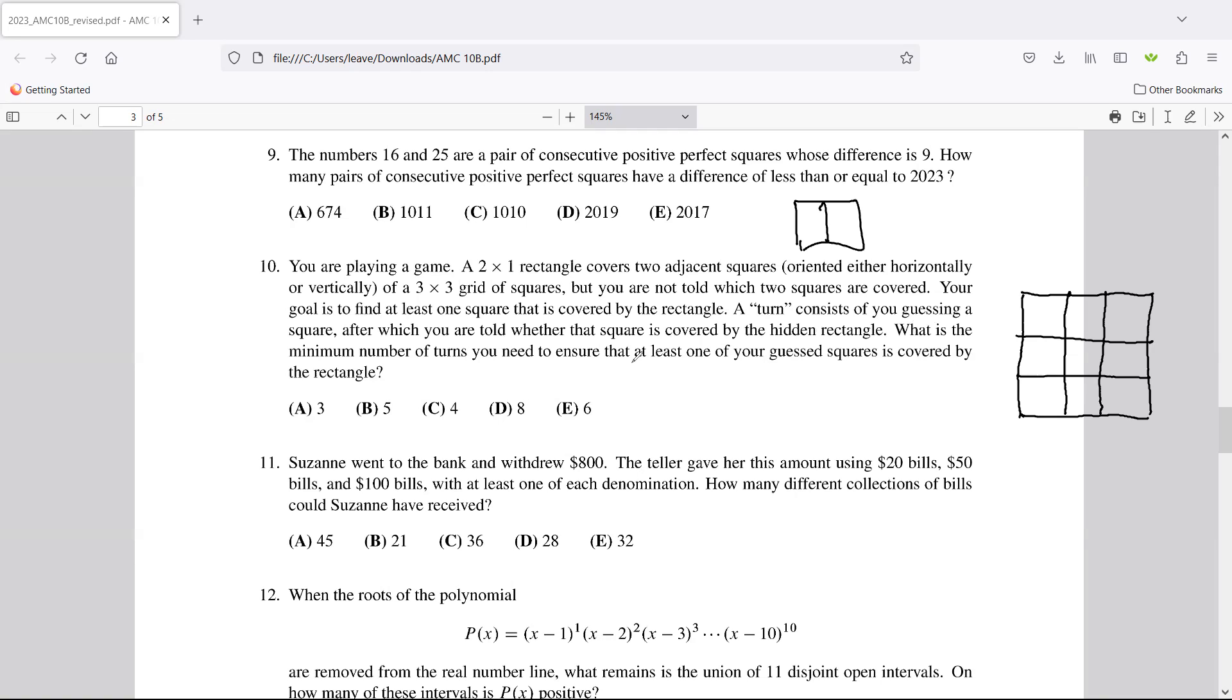You can buy that at any box store—Walmart, Target, whatever. A very famous game where your opponent can't see your side of the board. You place your ships and then you guess where their ships might be. You try to put them in interesting configurations to disguise what's happening or where the ships are located. What is the minimum number of turns you need to ensure that at least one of your guessed squares is covered by the rectangle?